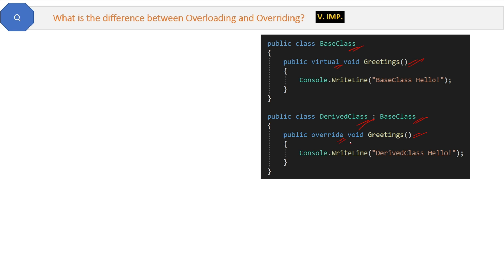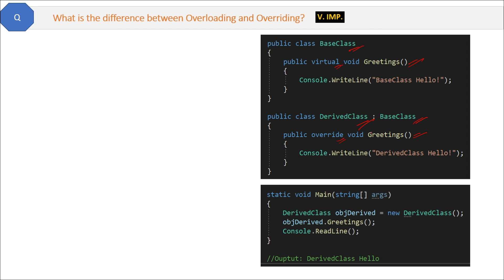When you create the object of the derived class and call the method, it will call the derived class method, not the base class method. In this way, we have overridden the base class method.